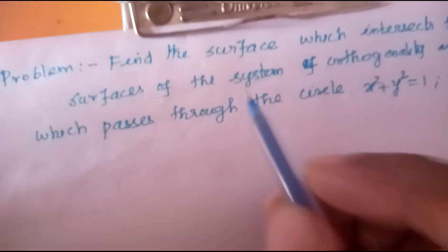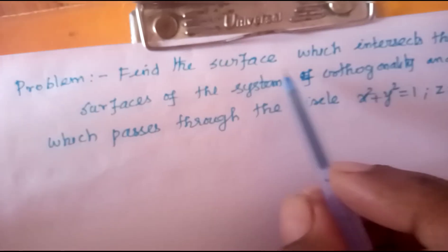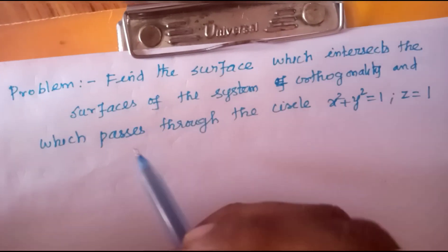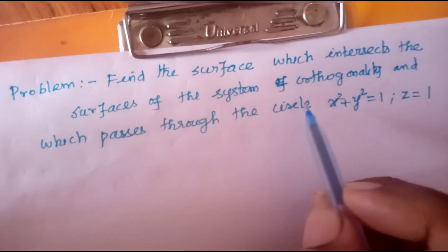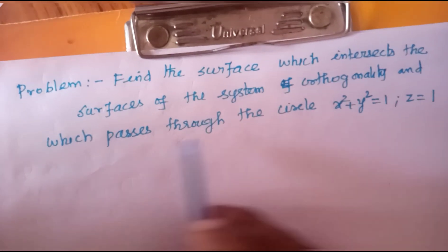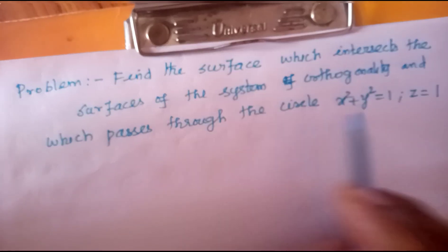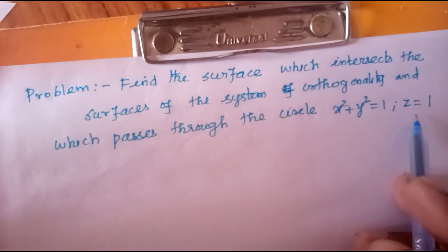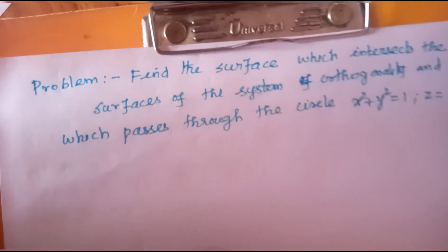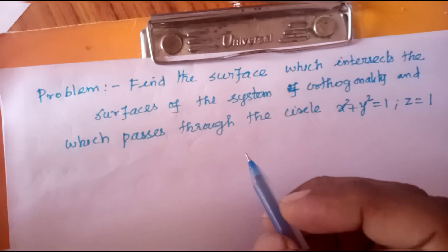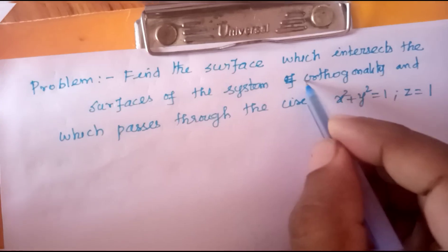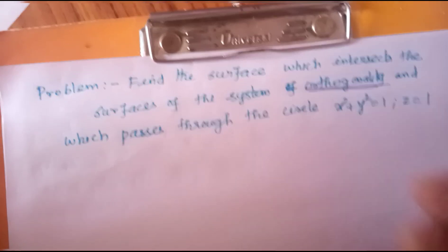Problem: Find the surface which intersects the surfaces of the system orthogonally and which passes through the curve x² + y² = 1, z = 1.